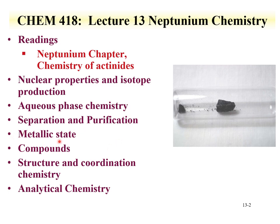We'll discuss the metallic state of neptunium and the different phases, which are becoming more complex. We'll talk about neptunium compounds that have been prepared, synthesized, and characterized. We'll go into structure and coordination chemistry, where the role of coordination chemistry in terms of oxidation state allows exploration of some of the F electron properties. We'll end this lecture discussing the analytical chemistry of neptunium — how one can determine neptunium concentrations and what different methods can be used.